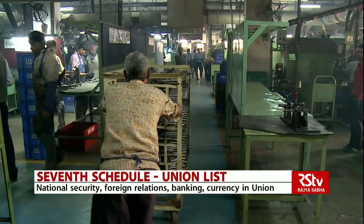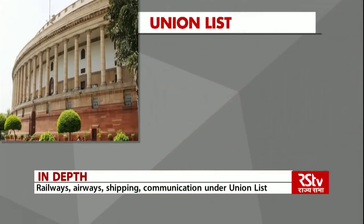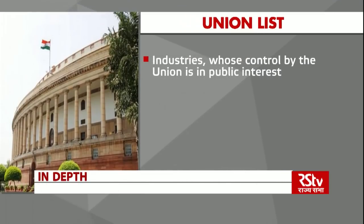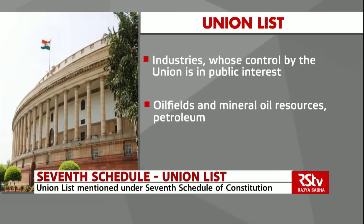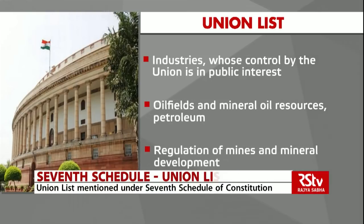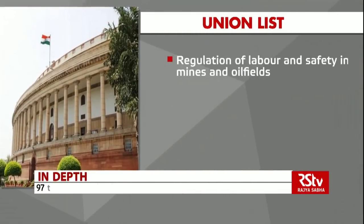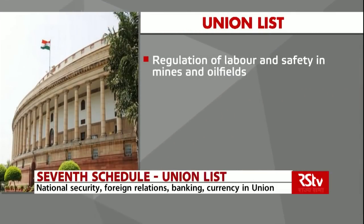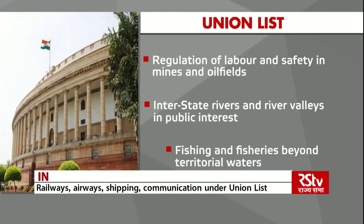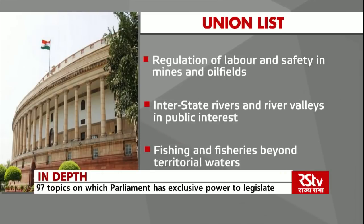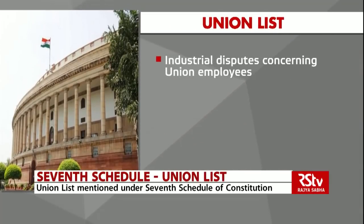The Parliament also has the authority to legislate on matters related to several industries: industries the control of which by the union is in public interest, oil fields and mineral oil resources, petroleum, other dangerously inflammable liquids, regulation of mines and mineral development, regulation of labour and safety in mines and oil fields, development of interstate rivers and river valleys as declared by law to be in public interest, fishing and fisheries beyond territorial waters, and industrial disputes concerning union employees.